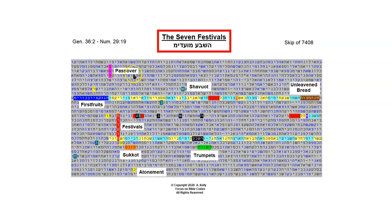We have Passover as the first one. Then we have unleavened bread in the brown. Feast of first fruits. Those are the spring feasts, and they're near the top. Then we have the summer feast, which is Shavuot. That's here in the teal going down diagonal, and it's sharing the ayin in the access term.